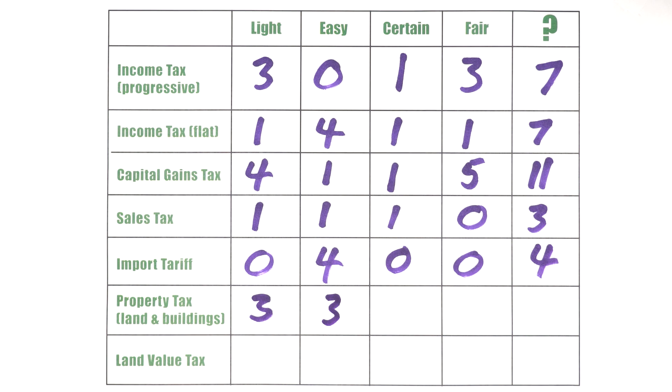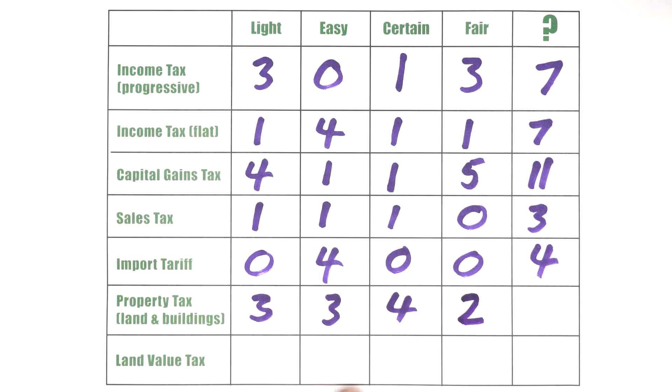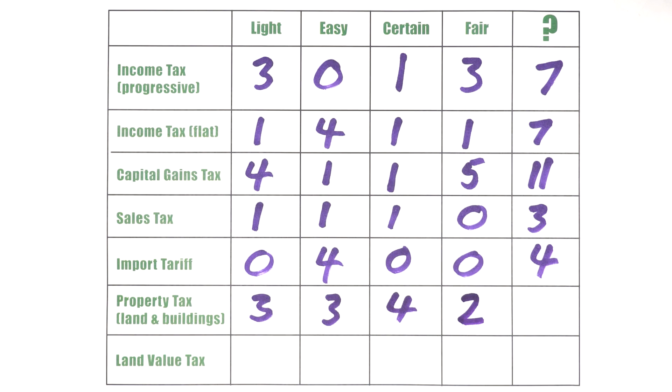Is it certain? Well, it is pretty highly certain, yes, because the value of real estate is public information. It may not be assessed with perfect accuracy, but it's there for everyone to see. So we'll give it a high mark on certainty. And is it fair? Well, in the sense that you're collecting land values, we're totally behind that in this course, so it's fair in that sense. But in the sense that it's collecting a tax on buildings, it's not fair because we're penalizing the buildings. So property tax on land and buildings is really two different taxes. It's a tax on land and it's a tax on the buildings. So we're only going to be able to give it a two on the fairness measure. That leaves us with 12, which is the highest score we've seen yet.